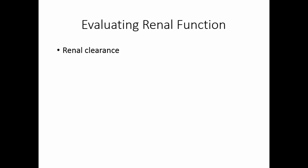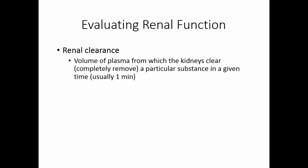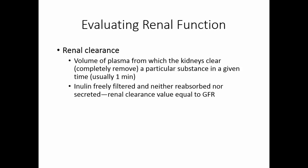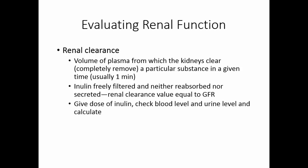Renal clearance is one way of evaluating renal function. It is the volume of plasma from which the kidney completely removes a particular substance in a given time, usually one minute. Inulin is a non-metabolized substance that can be given — it's freely filtered, neither reabsorbed nor secreted. So if we give it to someone, it's all going to come out in the urine, and the renal clearance of inulin will equal the glomerular filtration rate. To do a renal clearance test, you give a dose of inulin, check the blood level, allow urine to be collected for 24 hours, check the blood level again, and then check how much is in the urine.